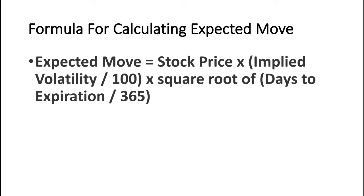When using this formula, pay careful attention to which implied volatility value you use. A stock can have multiple implied volatilities as there are multiple expiration cycles. Always use the implied volatility value in the expiration cycle that is closest to the days to expiration you are using. For example, if you had a 7-day implied volatility and a 40-day implied volatility and wanted to determine the expected move over the next 42 days, you should use the 40-day implied volatility value in your calculation.